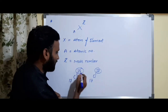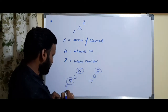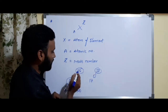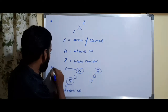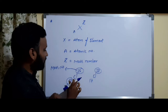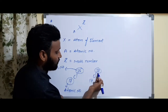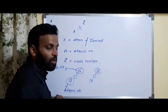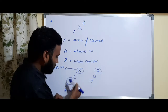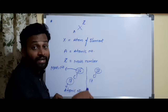Chlorine-35 has atomic number 17 and mass number 35. Chlorine-37 also has atomic number 17 but mass number 37. These 17s are the atomic number and 35 and 37 are the respective mass numbers. This is the representation of two chlorine isotopes and how they exist in nature.